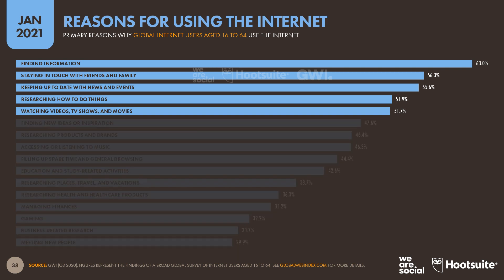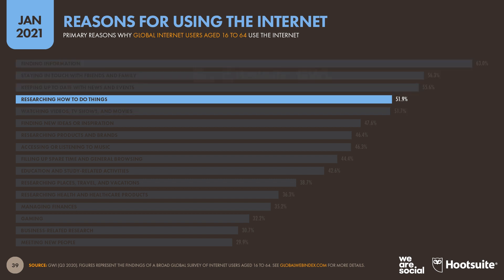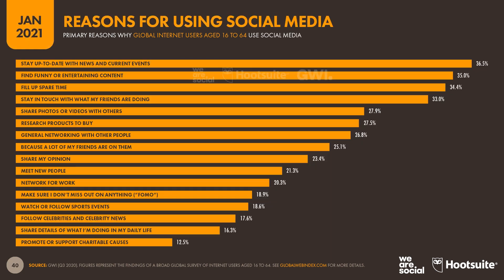More than half of the world's internet users cited five distinct motivations. As you can see on the chart here, those five things cover a wide variety of different activities. In addition to finding information, more than 50% of the world's internet users use the internet to stay in touch with friends and family, to follow news and current events, to research how to do things, and to watch videos, TV shows and movies. And I think marketers will want to pay particularly close attention to number four — researching how to do things — because this is a relatively undertapped opportunity when it comes to marketing content today.